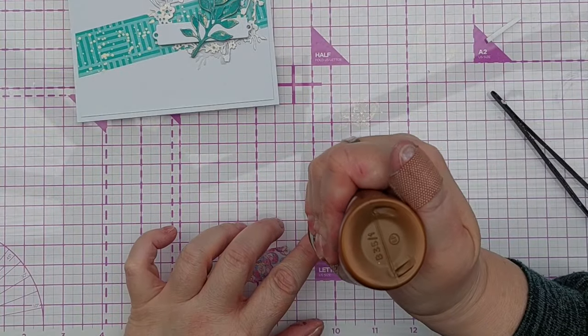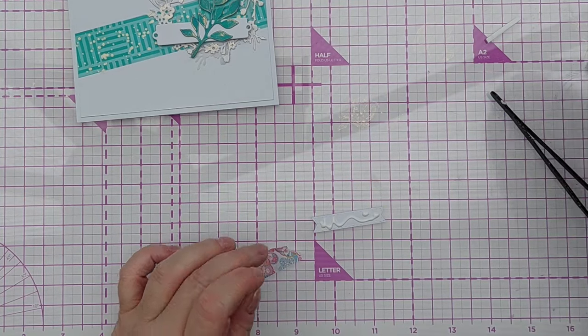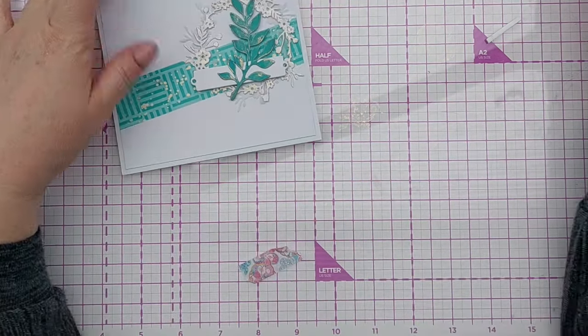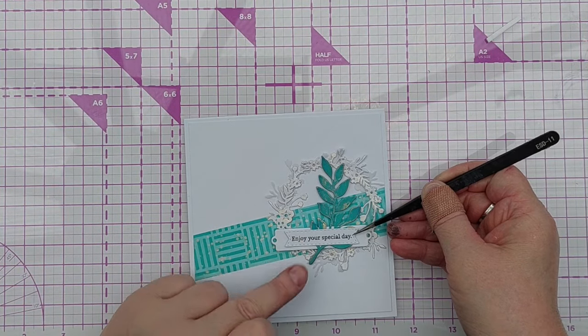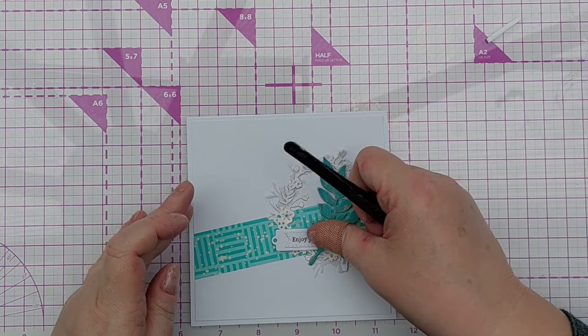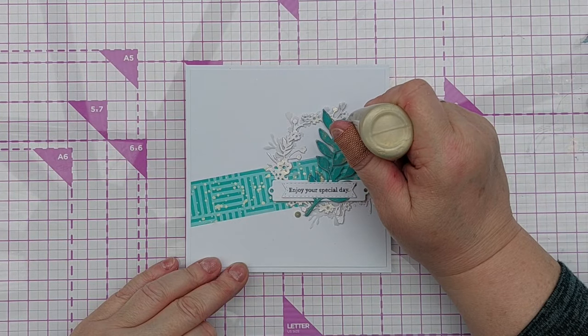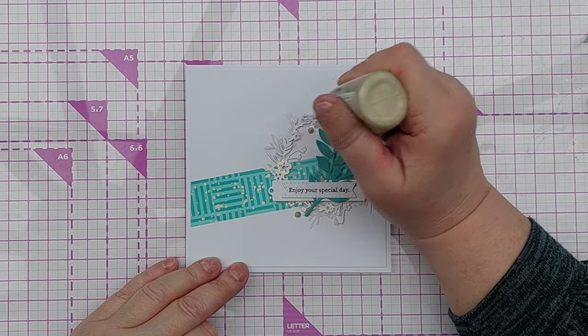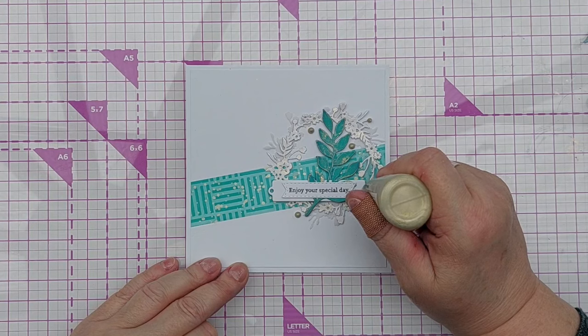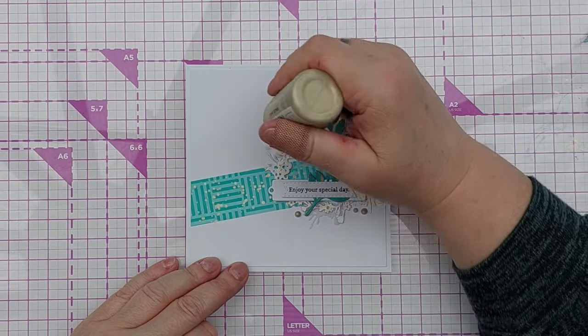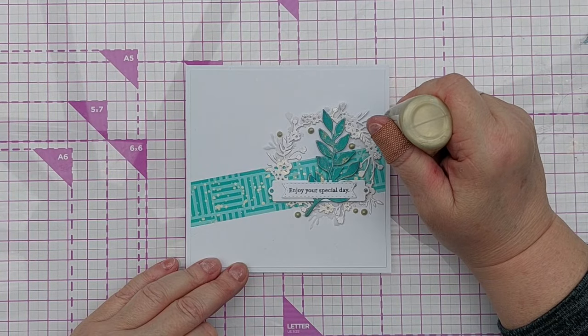For my sentiment I chose a very small stamp that says enjoy your special day and I cut this out using a stitch banner die and then stuck this over the leafy bit making sure to have some leaves sticking out the bottom. And as a finishing touch I added some gold Nouveau drops and then added some white Nouveau drops. I did think that I maybe put too many on but when I showed it to my daughter she said it was just right. So you'll have to let me know, have I gone a bit over the top with the Nouveau drops or is it just right?